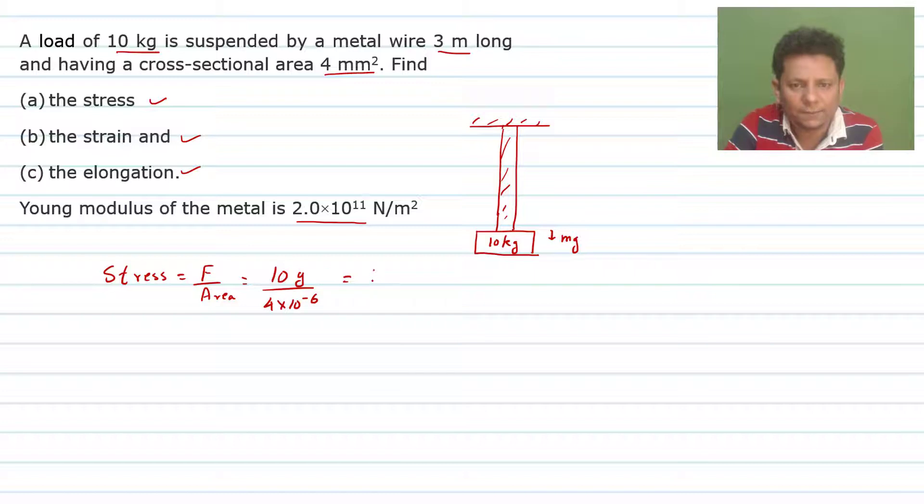If we take 10 as the value of g, this is 100 divided by 4 × 10⁻⁶. Now 100 by 4, which is 25. So stress will be equal to 2.5 × 10⁷ newton per meter square. This is your final answer.